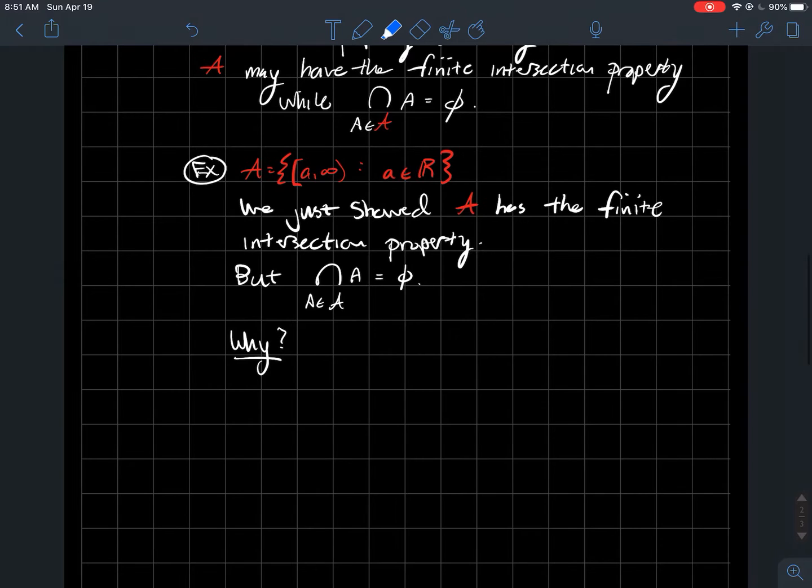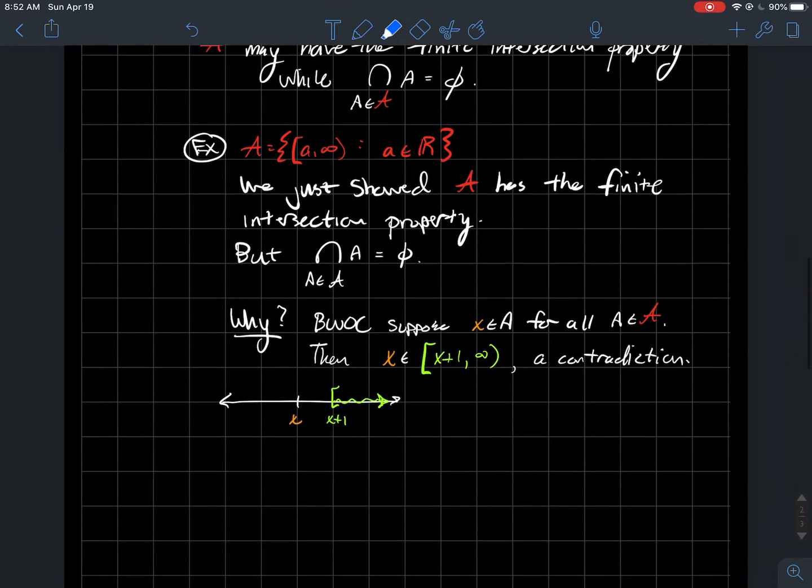How come? By way of contradiction, let's say you had a real number x that is in every single interval A. I mean one of these particular intervals, for every single interval in this set fancy A. What would that mean? Let's draw a picture.